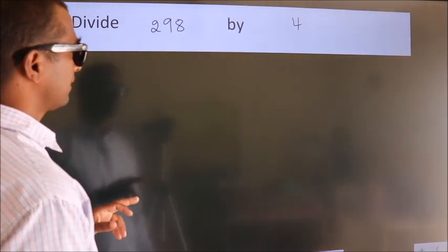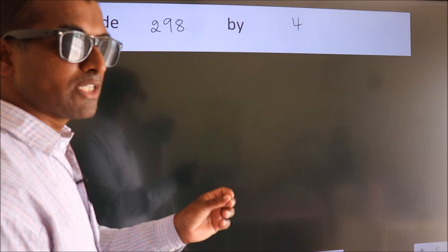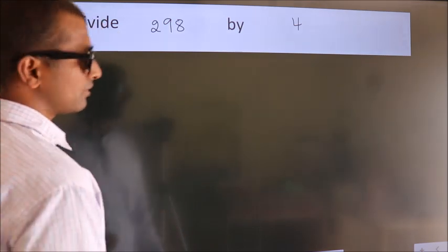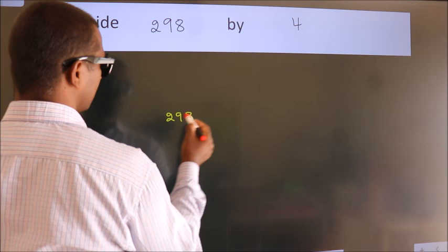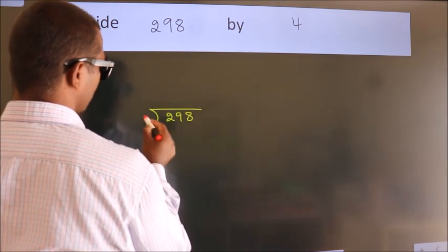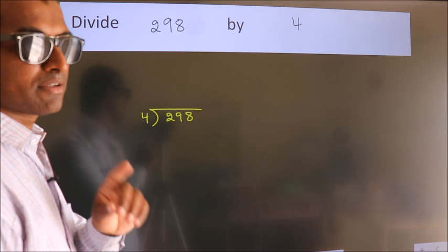Divide 298 by 4. To do this division, we should frame it in this way. 298 here, 4 here. This is your step 1.